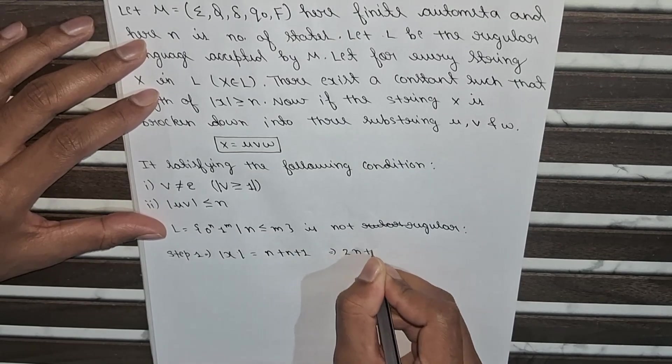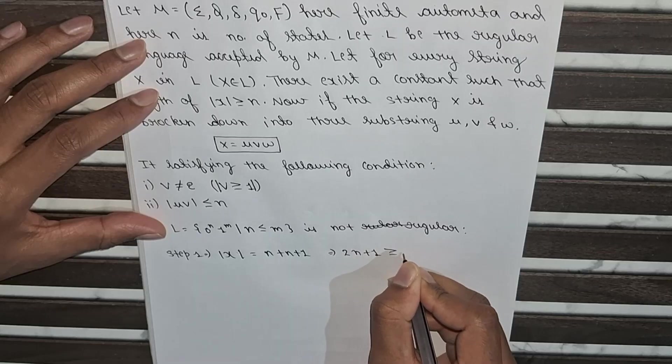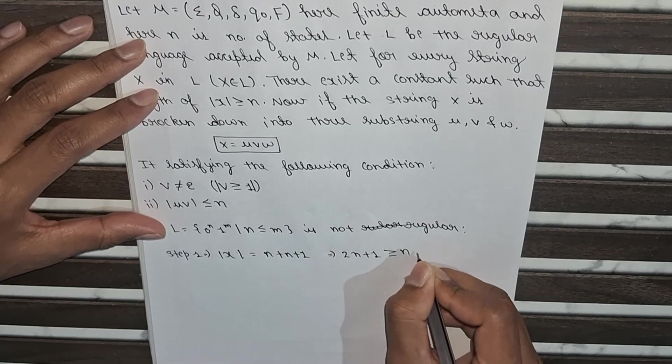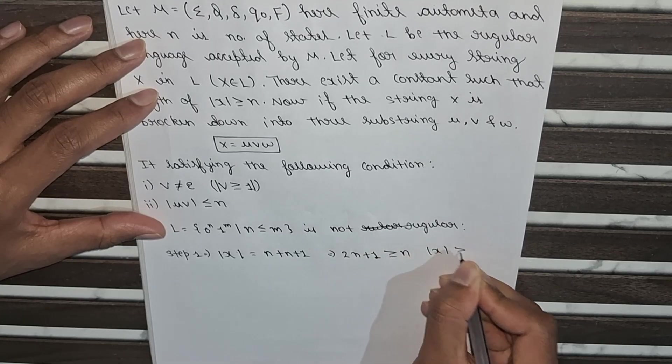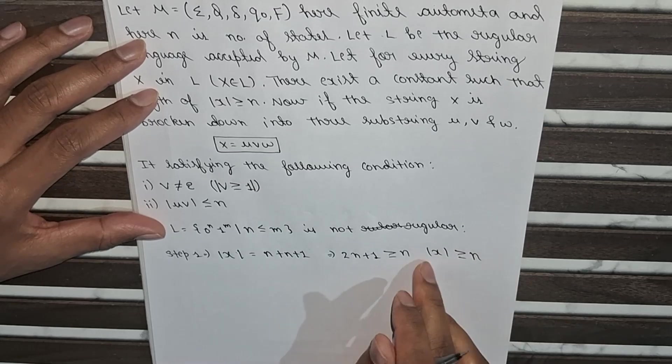So it will equal to 2n plus 1, which is greater than or equal to n. So directly we can say that it is greater than or equal to x.